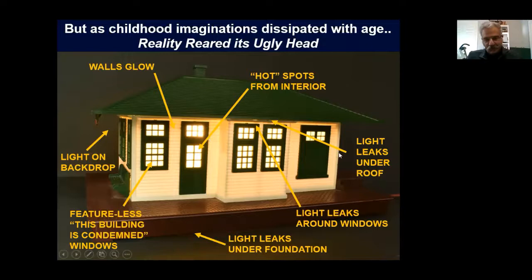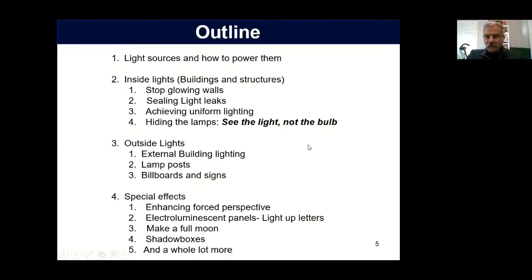You take a hard look at that station and there are several issues with it. First of all, the walls glow. Second, there are hot spots from the interior. There are light leaks from under the roof, around the windows, and under the foundation. You have this featureless — what I call — condemned-type windows. And if you weren't careful, light from the building was coming onto the backdrop, which was not quite realistic.